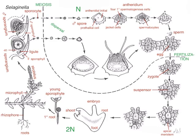The male gametophyte — the first division is into a little tiny cell called the prothallial cell. And that's thought to be the remnants or the vestiges of the ancient ancestral vegetative gametophyte. And then the other cell is the antheridial initial. That antheridial initial then goes on to divide and form jacket cells. Inside of the jacket cells, there are initially four primary spermatogenous cells, and those spermatogenous cells divide and divide and eventually make a bunch of sperm.